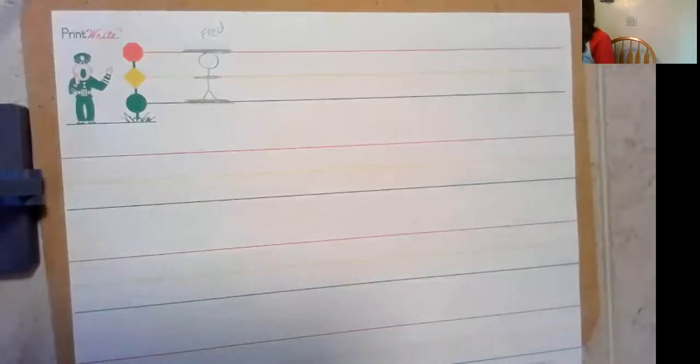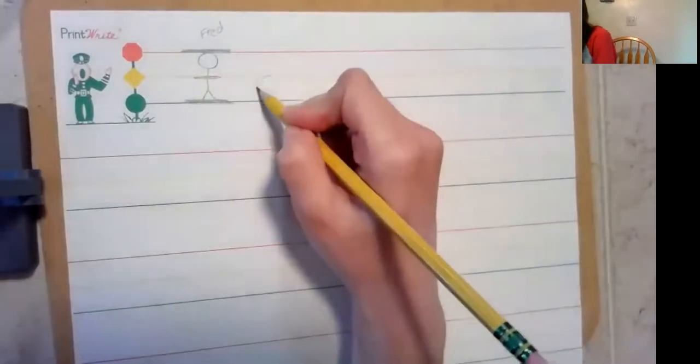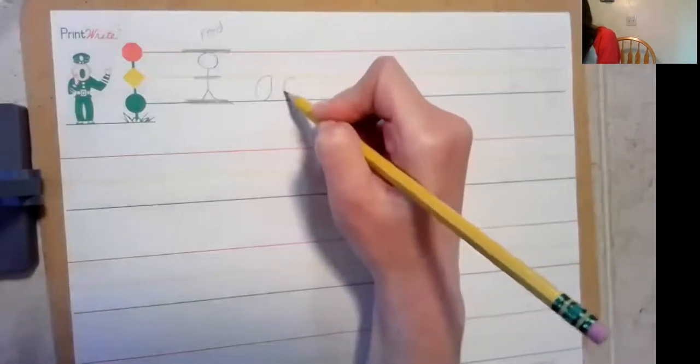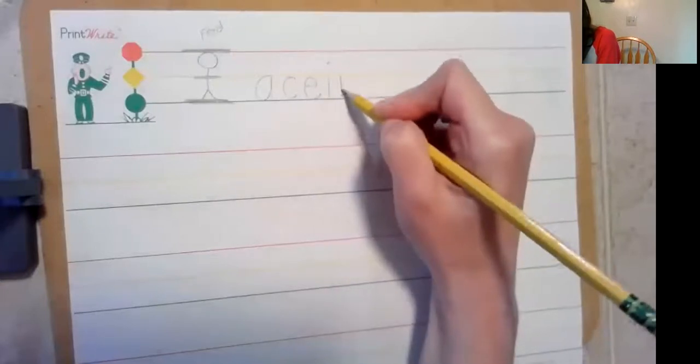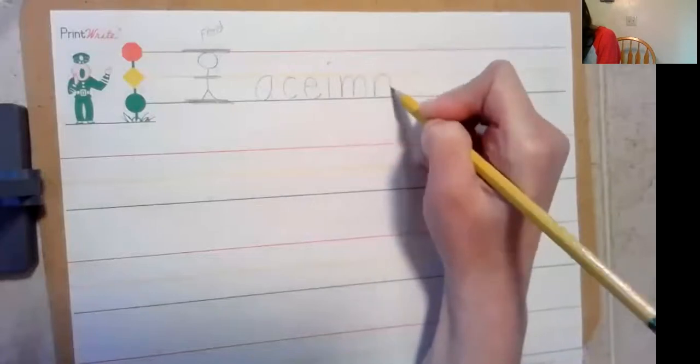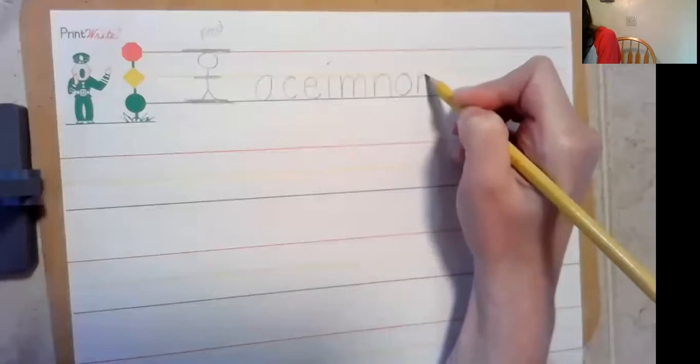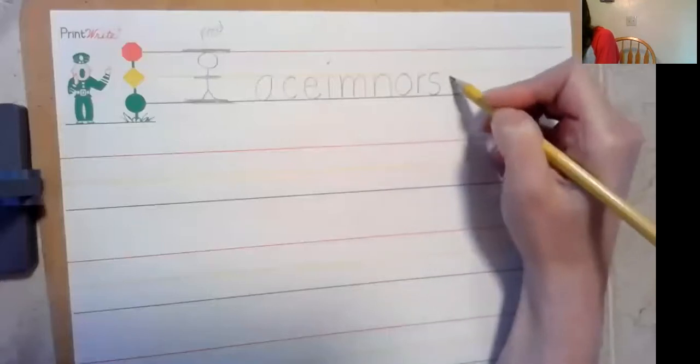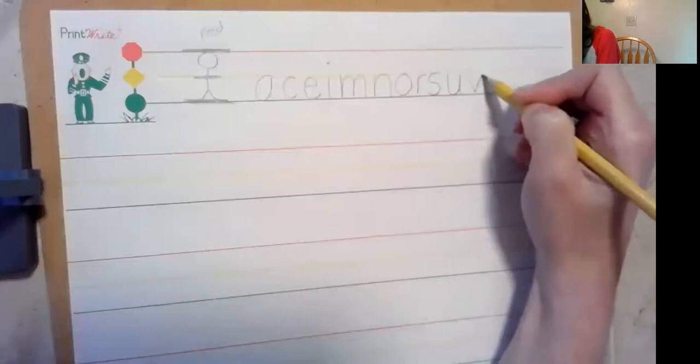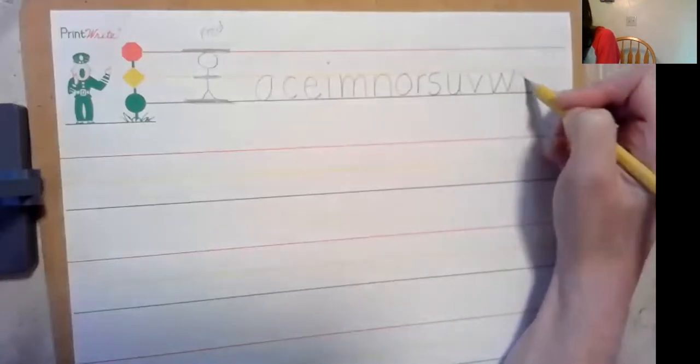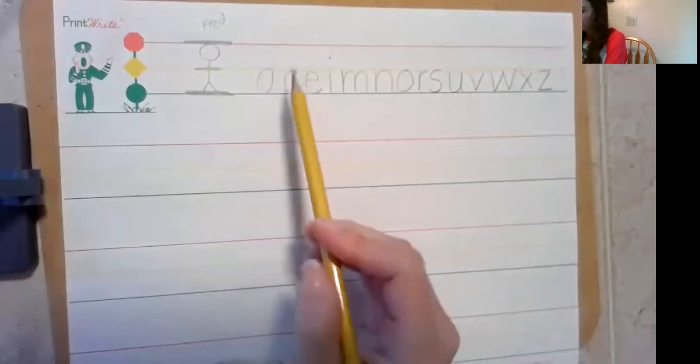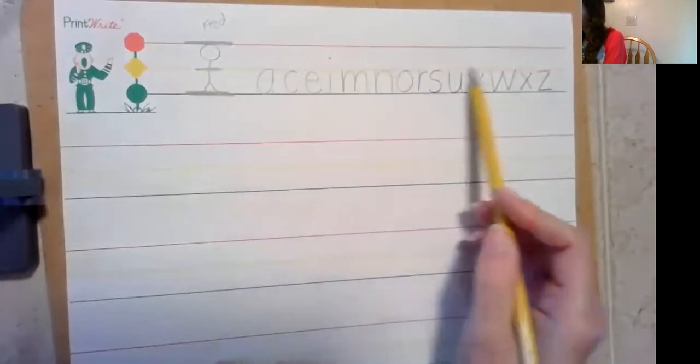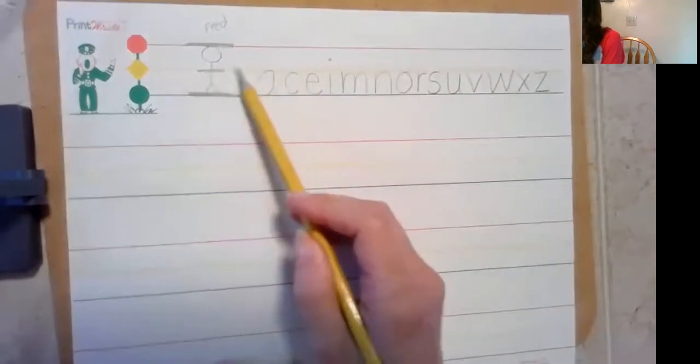So we're going to review some letters that kind of touch the headline, the foot line, the waistline. We're gonna start with some lowercase letters: a, c, e, i, m, n, o, r, s, u, v, w, x, and z. Now all those letters, all those lowercase letters that I just wrote, all touch the waistline. They only go up to the waistline, Fred's waistline.